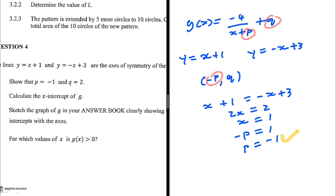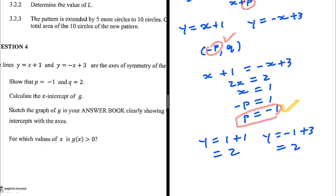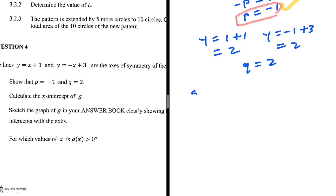For q, we substitute x equals 1 into one of the axes of symmetry. Using y equals x plus 1: 1 plus 1 equals 2. Checking with the other equation: minus 1 plus 3 also equals 2. So the value of p is minus 1 and the value of q is 2.